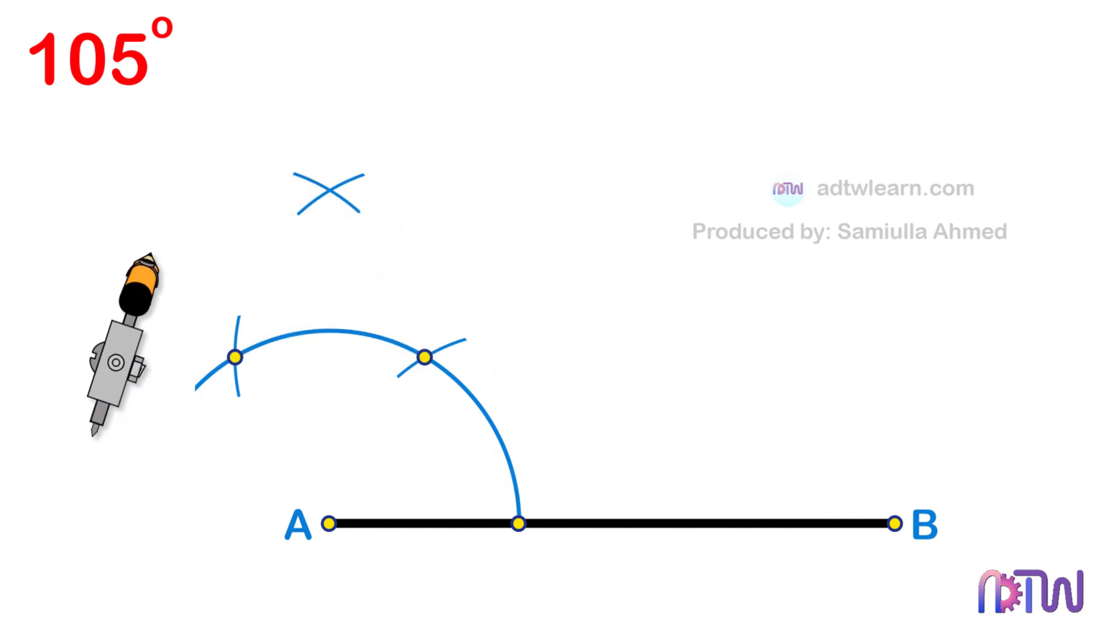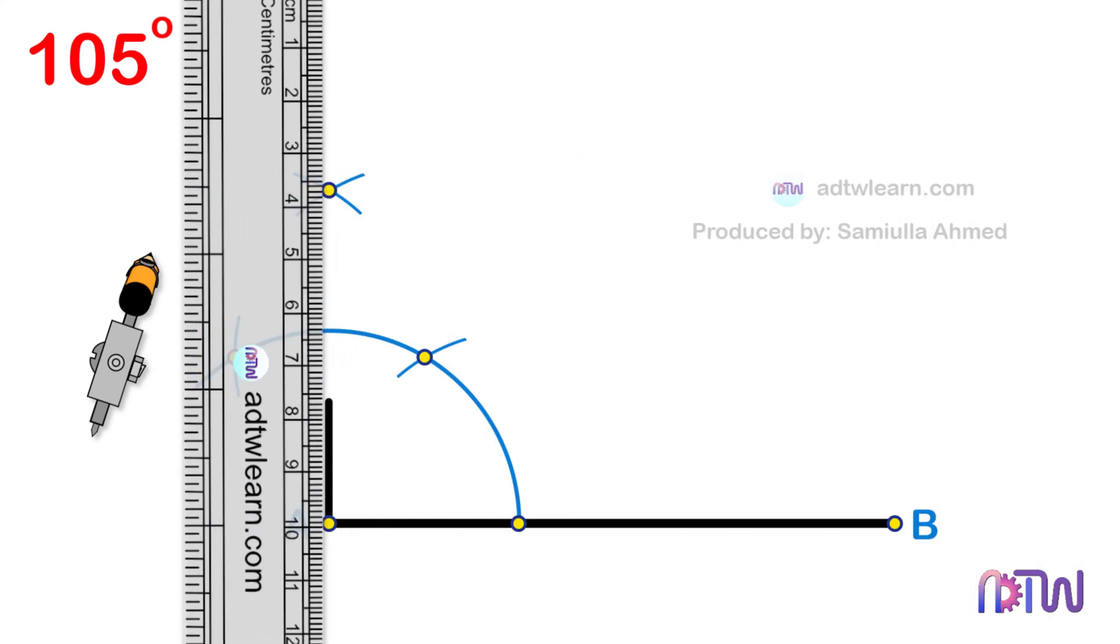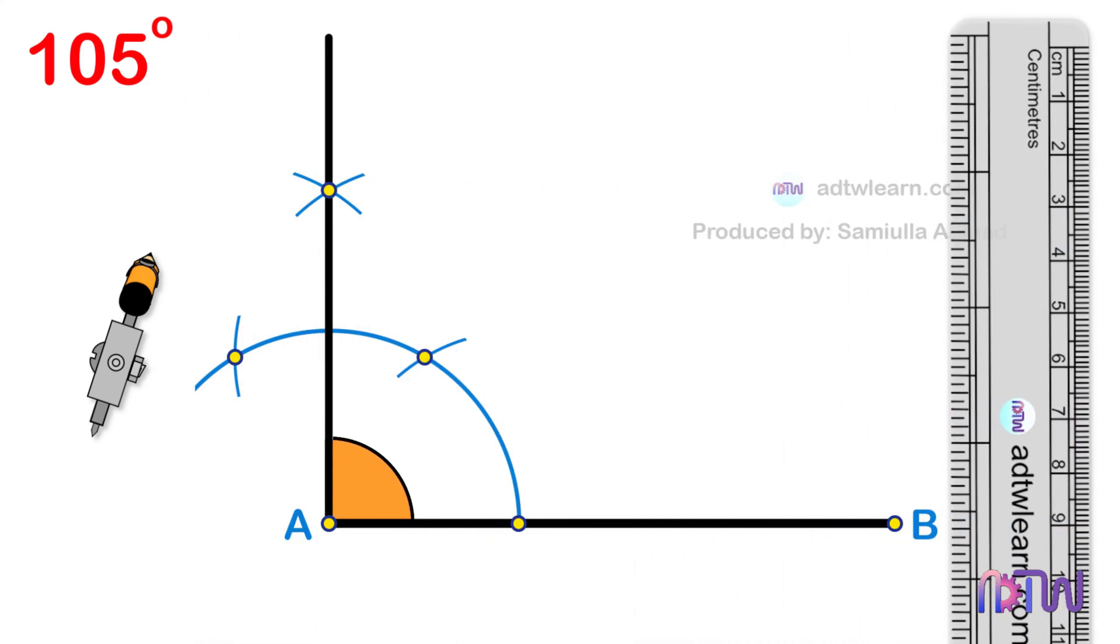Draw a line passing through this point from endpoint A of the line. This angle will be 90 degrees.